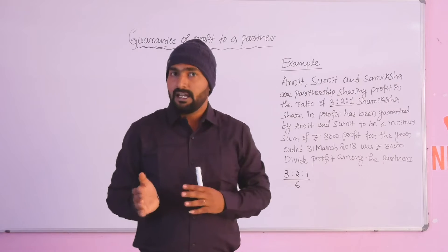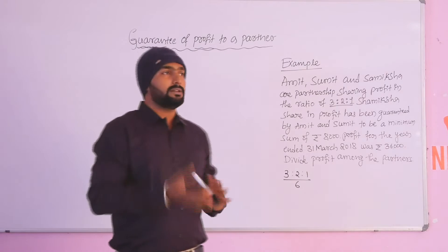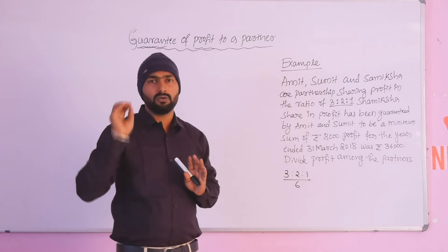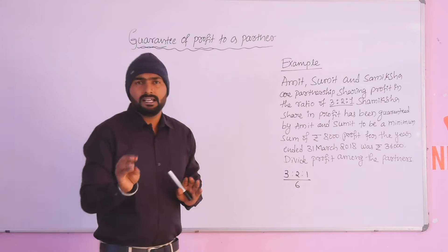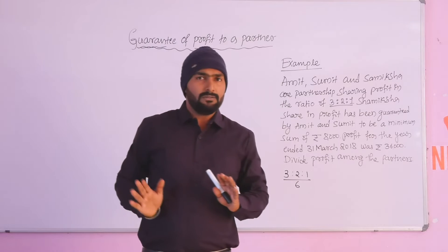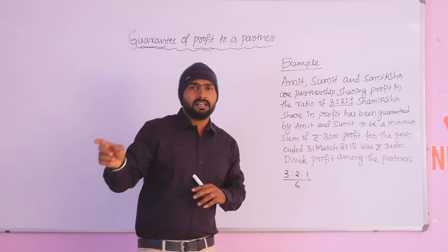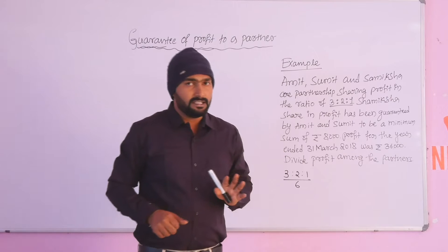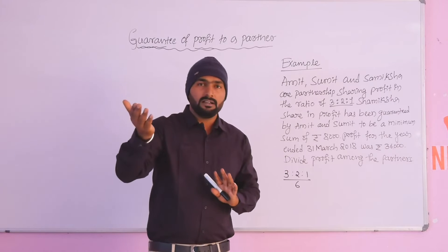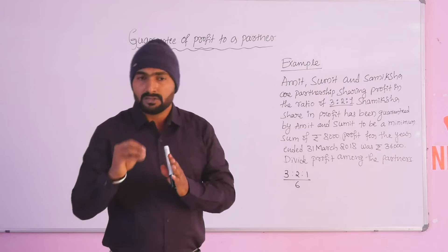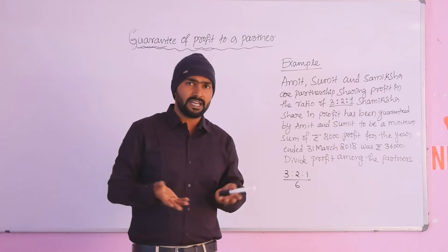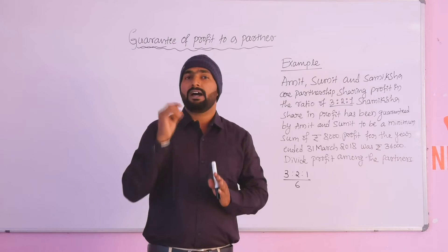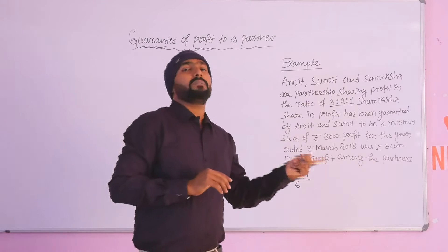Guarantee — who puts in the guarantee? The guarantee of profit means a minimum sum of amount of profit assured to an incoming partner. For example, X, Y, Z — Z is the guaranteed partner. X and Y guarantee that Z will receive a minimum profit of 10,000. So if the company earns more than that, there is no need to calculate any deficit. If the profit earned is below the guarantee amount, then the deficit concept applies. Who puts in the guarantee? The guaranteeing partner covers the shortfall.